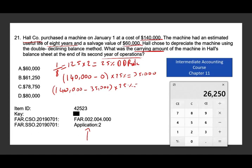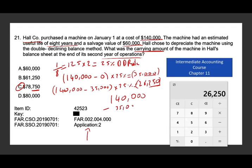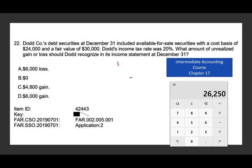The year two depreciation is $26,250. I want to look for an answer ending in 750, because taking $140,000 minus $35,000 minus $26,250 should give a number ending in 750. The answer is C: $78,750. If you're strapped on time, C is the only answer ending in 750, and C is indeed the answer.